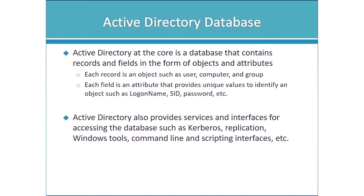Each record in the Active Directory database represents an object — a user, a computer, a group, a shared folder, a printer, a domain controller, an OU, and so on. Every object has attributes that define it — unique values identifying things about the object, like login name, SID, password, department, office, city, state, phone numbers, manager, and title.